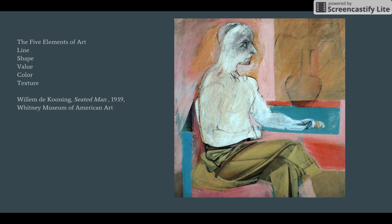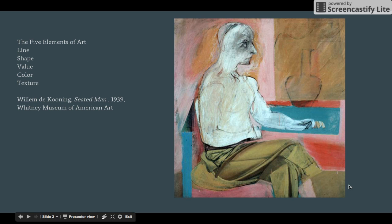Secondly, shape. We see the figurative shapes, which are irregular — not geometric — shapes that make up the body. The irregular shapes that make up the folds of the pants. We see geometric shapes based on rectangles that make up the chair and table. And the background is divided up into a couple of rectangles at the bottom as well. So we have both organic and geometric shapes, and the division of the canvas is in rectangles.